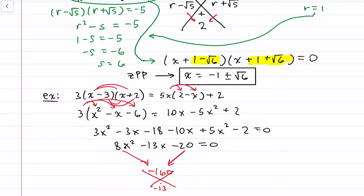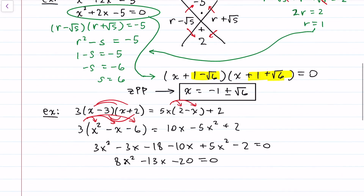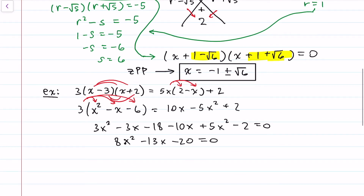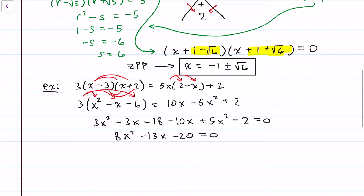If you know the AC method, you'd multiply the outer coefficients and look for numbers that multiply to that product and add to the middle term, negative 13. But no such integers exist. Instead, we can use the r ± √s factoring method. Since there's a leading coefficient of 8, we first divide everything by 8 to get x² - (13/8)x - (5/2) = 0.